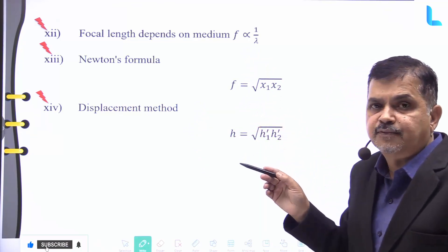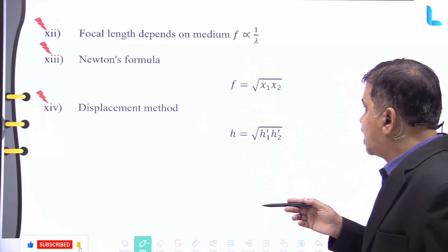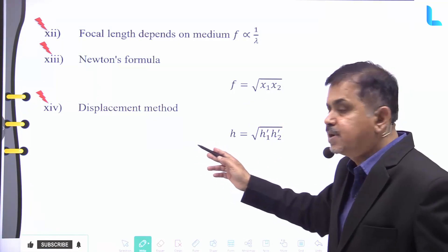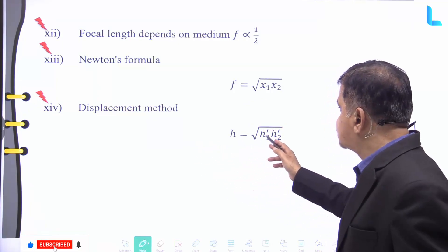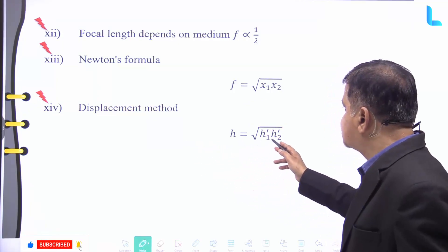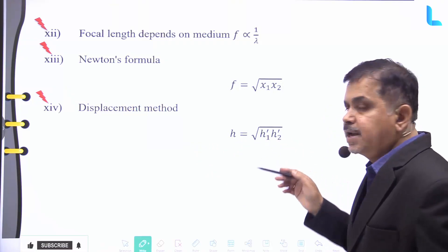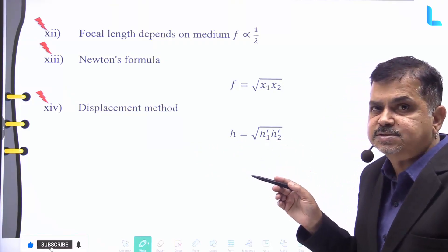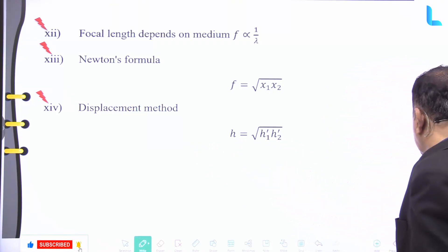Newton's formula gives f = √(x₁·x₂). By the displacement method, the object height h = √(h₁'·h₂'), where h₁' and h₂' represent the apparent heights in the two positions.